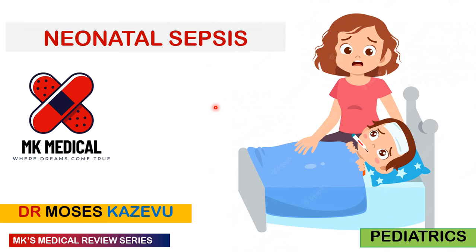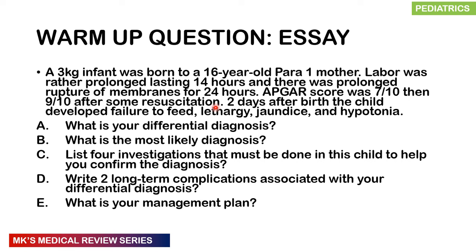Here's a warm-up question — an essay question. A 3 kg infant was born to a 16-year-old para one mother. Labor was prolonged, lasting 14 hours, and there was prolonged rupture of membranes for 24 hours. APGAR score was 7 out of 10, then 9 out of 10 after some resuscitation. Two days after birth the child developed failure to feed, lethargy, jaundice, and hypotonia. What is your differential diagnosis? What is the most likely diagnosis? List investigations. Write two long-term complications. What is your management plan?